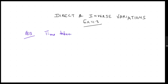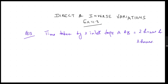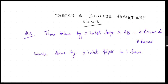First, we write the time taken by the two inlet pipes. Inlet tap A takes 2 hours and inlet tap B takes 3 hours. So work done by the two inlet pipes in one hour is 1/2 plus 1/3, which equals 5/6.